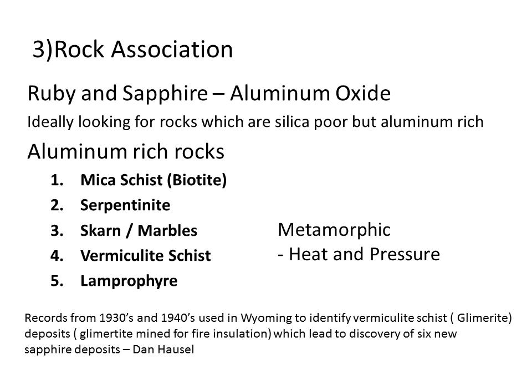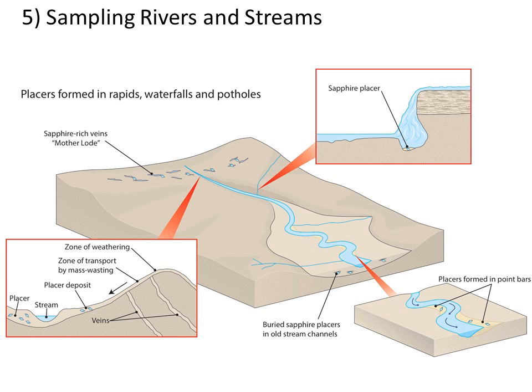Sampling rivers and streams is also a good approach. Many gem deposits have been found this way. Wherever water slows — like on the outside of river bends — heavy minerals will settle. This is used for gold prospecting too. Sapphire is quite heavy, as is zircon and topaz, so look on the outside bends of rivers where the current slows and allows these minerals to settle.